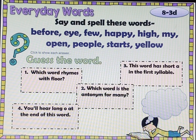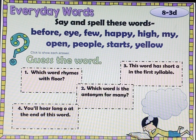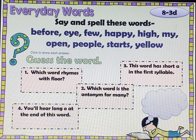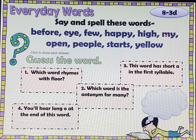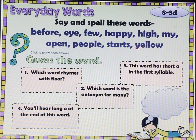Say and spell these words: before, I, few, happy, high, my, open, people, starts, and yellow. Before: B-E-F-O-R-E. I: E-Y-E. Few: F-E-W. Happy: H-A-P-P-Y. High: H-I-G-H. My: M-Y. Open: O-P-E-N. People: P-E-O-P-L-E. Starts: S-T-A-R-T-S. And yellow: Y-E-L-L-O-W.